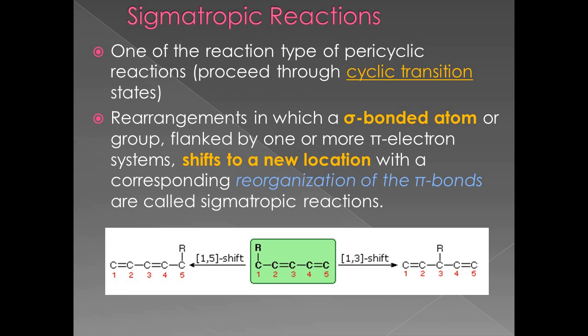In sigmatropic rearrangements, a sigma-bonded atom shifts to a new position, and at the same time the double bond position is also changed.